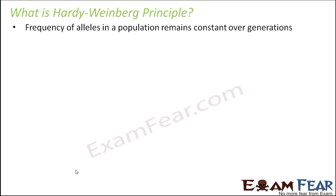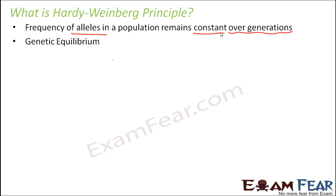This principle states that the frequency of alleles in a population always remains constant generation after generation. The frequency of alleles means the number of times each allele occurs, and that will remain the same over all the generations. This is also known as genetic equilibrium, similar to thermal equilibrium or chemical equilibrium, where the frequency of alleles is constant over all generations.